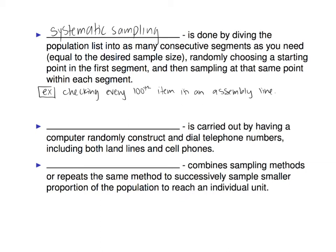You decide ahead of time how many samples you need. Say you want to sample 200 things — you divide however many items you have into 200 pieces. Then you randomly pick a starting point in your first group. Once you check the 21st coffee cup, after that you check the 121st, 221st, and so on. In the end, once you've sampled everything that goes through the assembly line that day, you have the sample size you need, done in a very systematic manner.